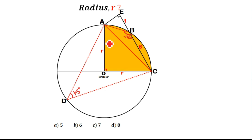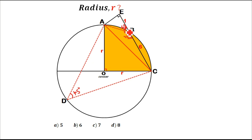Since ABCD is a cyclic quadrilateral and opposite angles of a cyclic quadrilateral add up to 180 degrees, if angle D is 45 degrees then angle B is 135 degrees. The angle in a straight line gives 45 degrees remaining, and since the angles in triangle AEB sum to 180 degrees with a 90-degree angle, the base angles are both 45 degrees. With equal base angles, the two sides are equal, so side AE equals EB equals 1 unit.